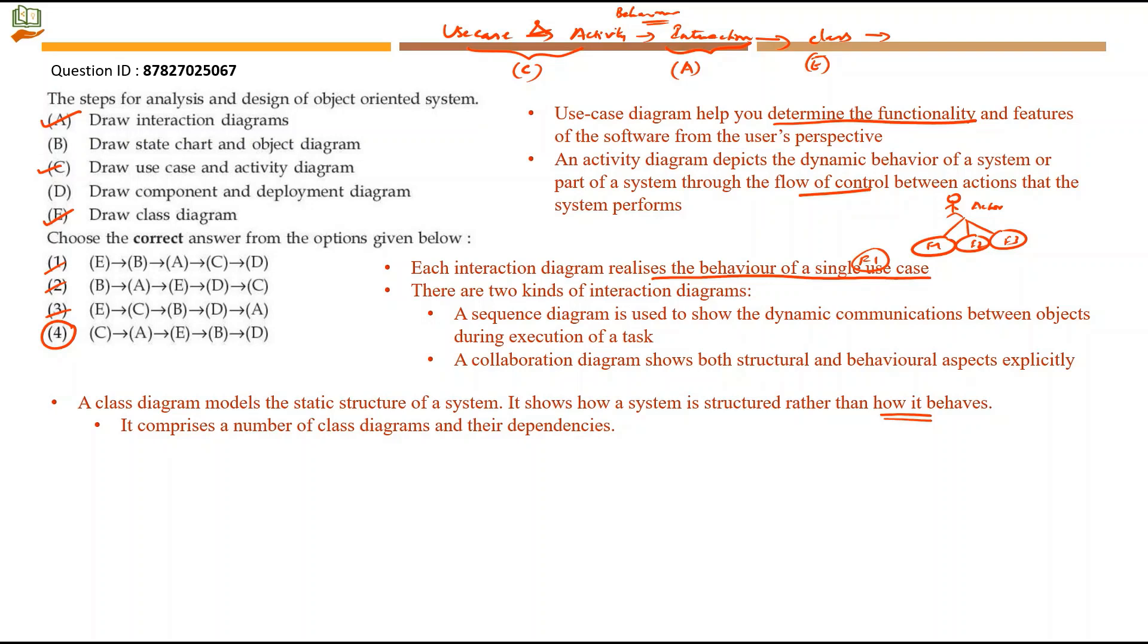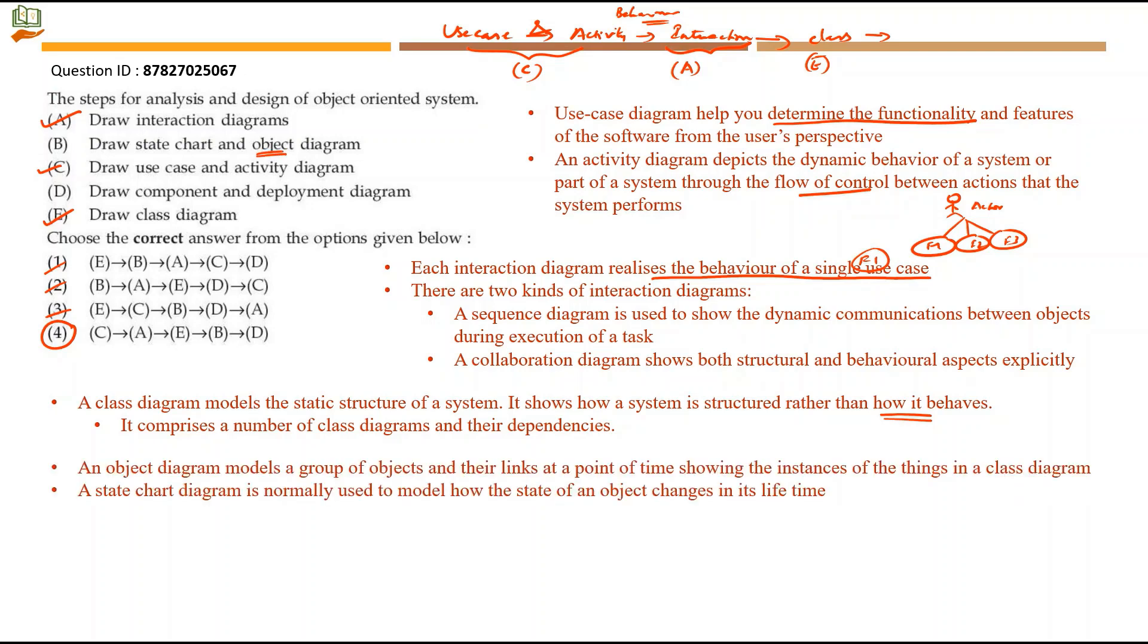From class I will be able to get object. With the clue here in B, we will move on further. An object diagram models a group of objects and their links at a point of time, showing the instances of the things in a class diagram. So after I draw a class diagram, from the class diagram I will be able to make object diagrams. Objects are nothing but instance of a single class. Next, a state chart diagram is normally used to model how the state of an object changes in its lifetime. So if you want a state chart diagram to be drawn, definitely you will need an object diagram from the class diagram. From E we are moving to B.